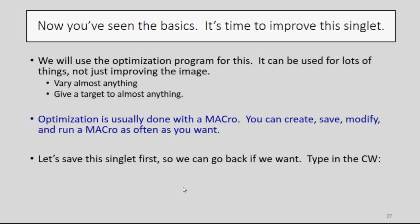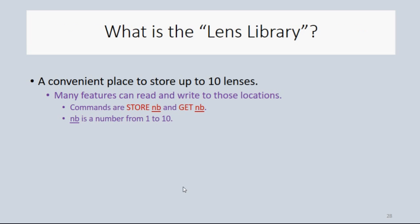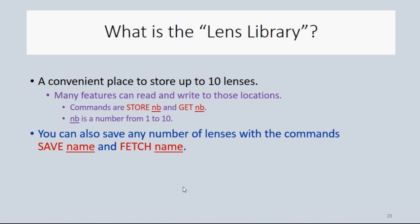First, let's save the singlet. So we can go back to it if we want to. Type in the command window, store 3. That saves the lens file in location 3 of the lens library. What's the lens library? It's a convenient place to store up to 10 lenses. It has the virtue that many features of Synopsys can read and write to those locations automatically, which makes it real handy. You can also save any number of lenses on disk, save, and then fetch, and you give it a file name.